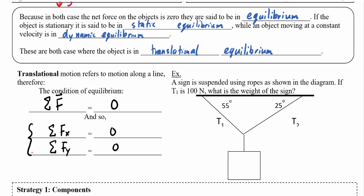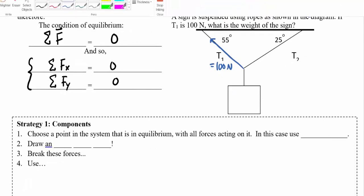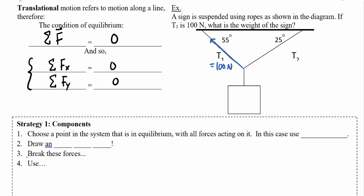We've got a sign suspended using ropes shown in the diagram. The tension T1 is equal to 100 Newtons, and the question is what is the weight of the sign? The first step is to choose a point in the system that is in equilibrium and identify all forces acting on it. In this case we're going to use the spot where the ropes meet.